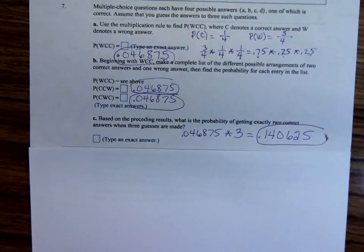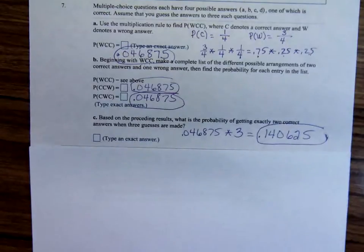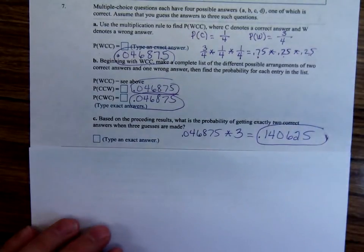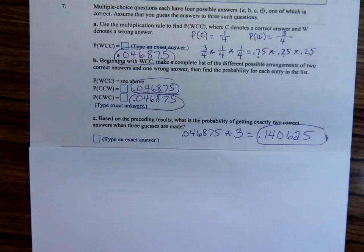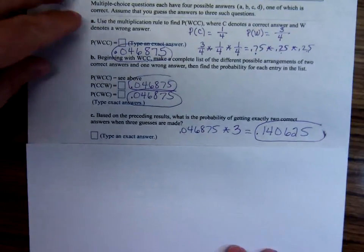So if you have three problems, multiple choice, and you're just guessing, it's not too great a likelihood that you'll get one wrong and exactly two of them right. Well, 14%.